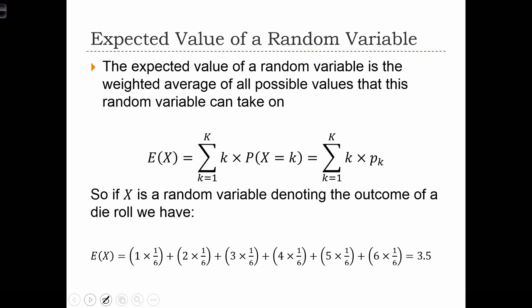We're going to define something called the expected value of a random variable. The expected value is the weighted average of all possible values that a random variable can take on. We're going to denote the expected value with a capital E, and then inside the brackets we'll have the random variable. So the expected value of X.